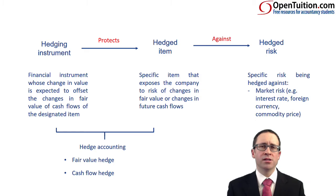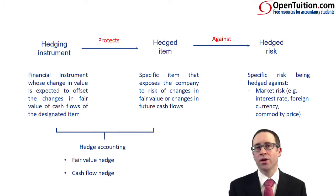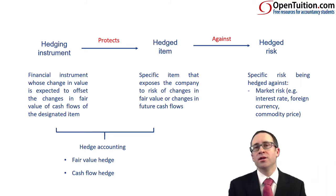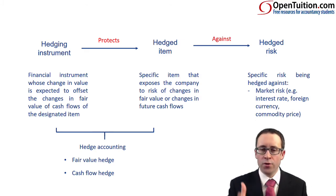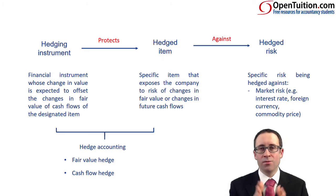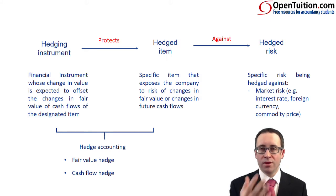The hedge risk on the right-hand side looks at the specific risk — and here we're really only concerned with market risk: changes in market rates of interest, foreign currency, or maybe a commodity price if you're buying a commodity in the future. Imagine you're in the airline industry looking at buying fuel in the future. There's a risk the price of fuel will change, so you need to hedge against that specific item — the future purchase of fuel, a future cash flow. So you enter into a derivative.